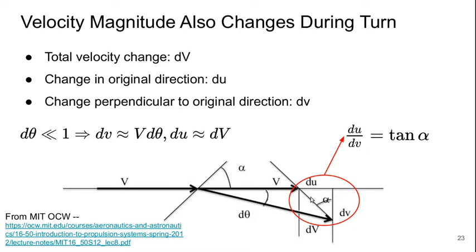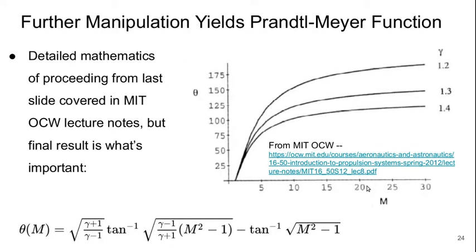You can take that result and run with it and manipulate this into something that I'm not going to go through the steps here. This is covered in the MIT open courseware lecture notes. But the final result is what's important, and it's what's at the bottom of the slide here. So we end up getting a finite theta turning angle, which is a function of incoming Mach number. And this is this very complicated-looking function, which is just a function of incoming Mach number, as well, of course, as the specific heat ratio for the gas.